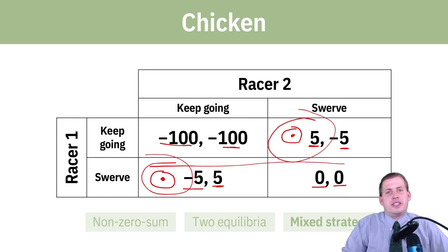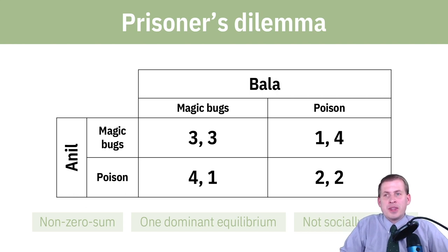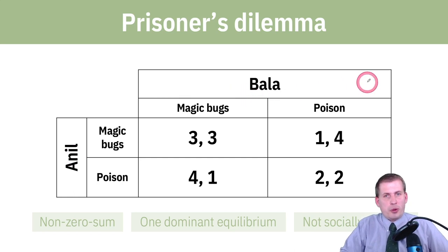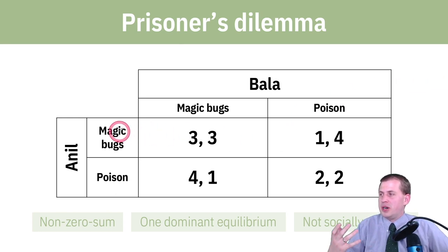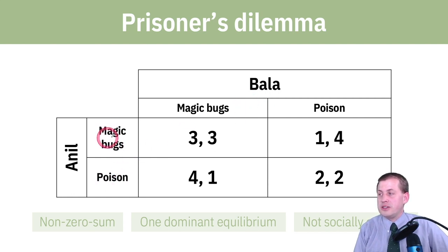One of the most famous game theory games is the prisoner's dilemma, which you'll come across in lots of classes because people are obsessed with it. This is a situation where the socially optimal outcome is not actually attainable because the incentives make it so nobody will achieve it. The example from the reading has Anil and Bala as farmers who need to deal with insects — they can either use special bugs that eat bad pests as a natural pesticide, or they can use poison, which is effective but washes downstream and hurts the other person's crops.